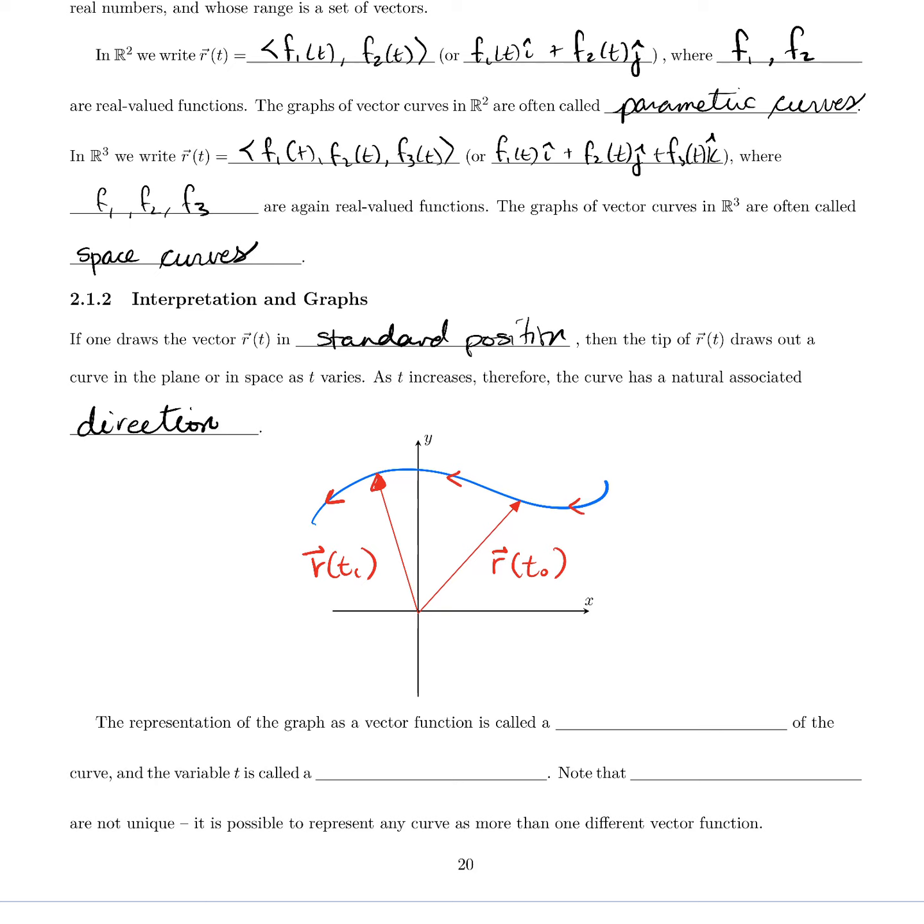The representation of a graph of a vector function is called a parameterization of the curve, and the variable t is called a parameter.